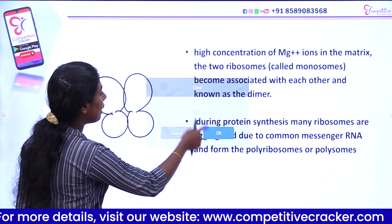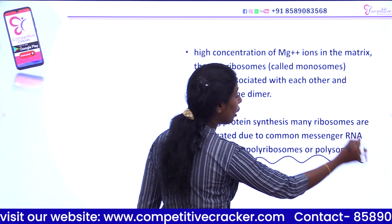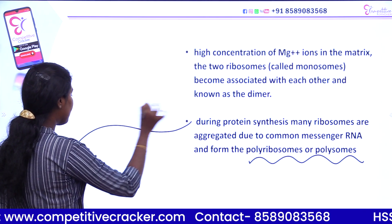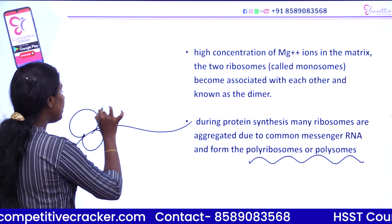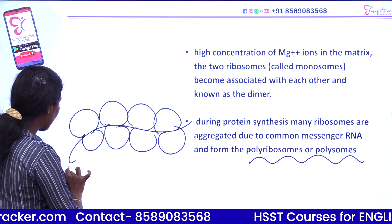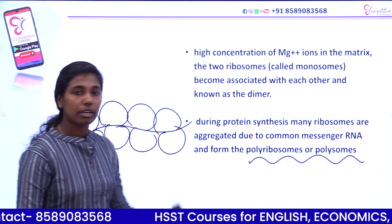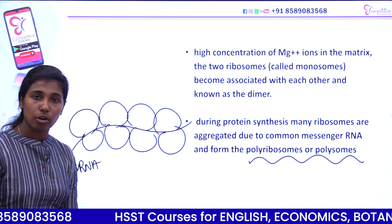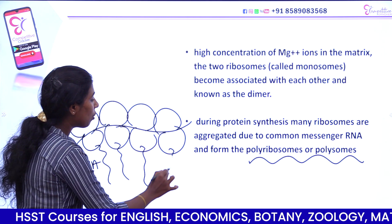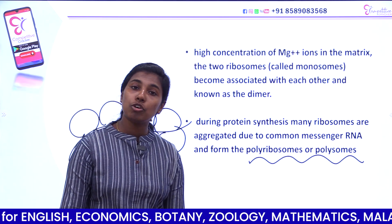Polyribosomes, also called polysomes, are formed when multiple ribosomes attach to a single mRNA strand. This allows all of them to synthesize protein simultaneously, making protein production faster and more efficient.